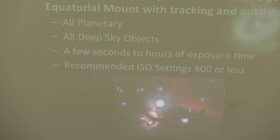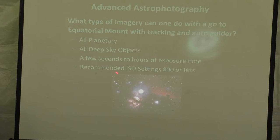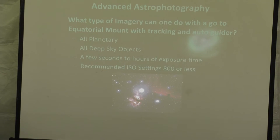Advanced, what kind of imagery can you do with a go-to equatorial? All planetary, all deep sky objects. Exposure times from a few seconds to hours, which sometimes you're going to need that. Recommended setting is ISO 800 or less.